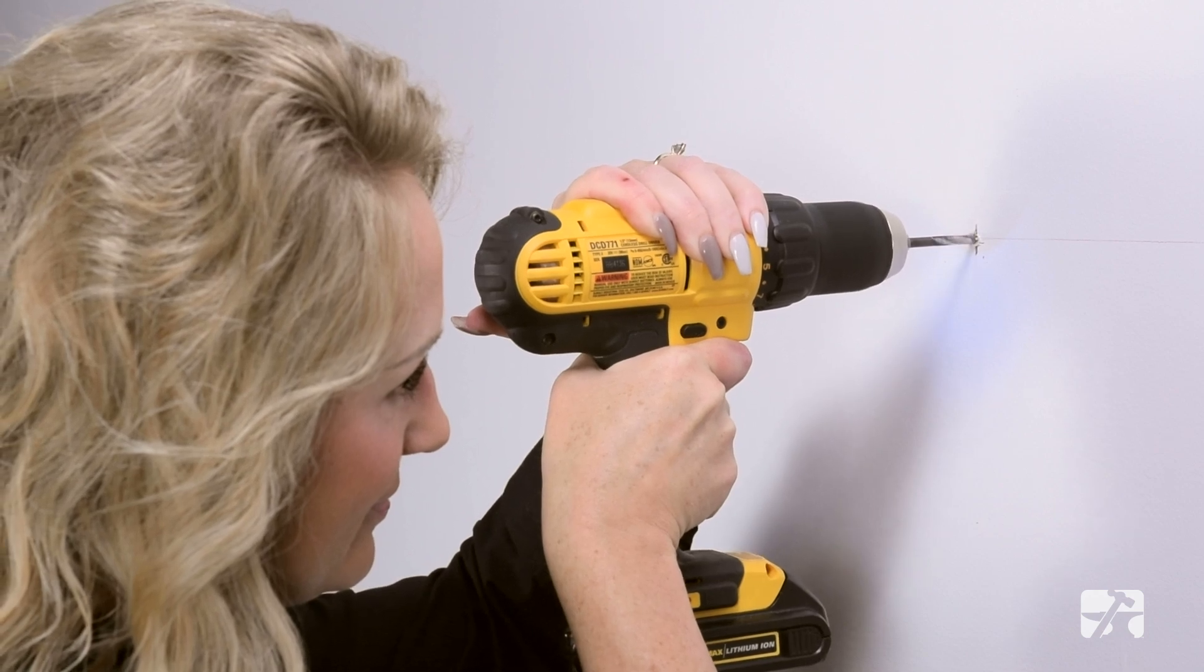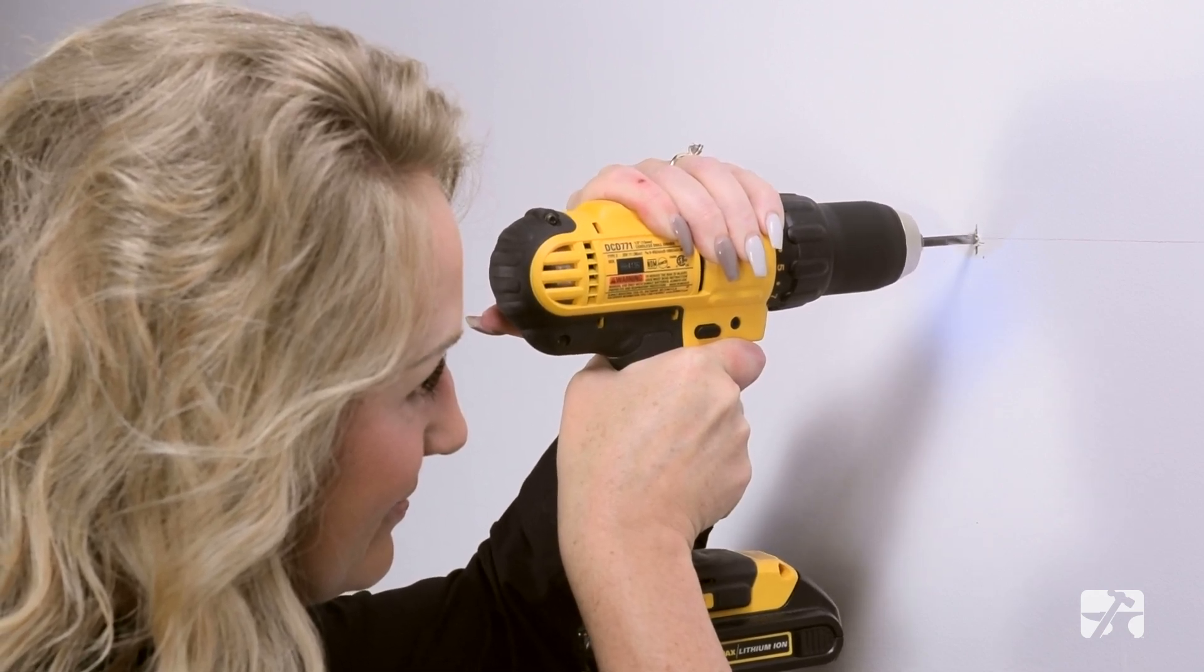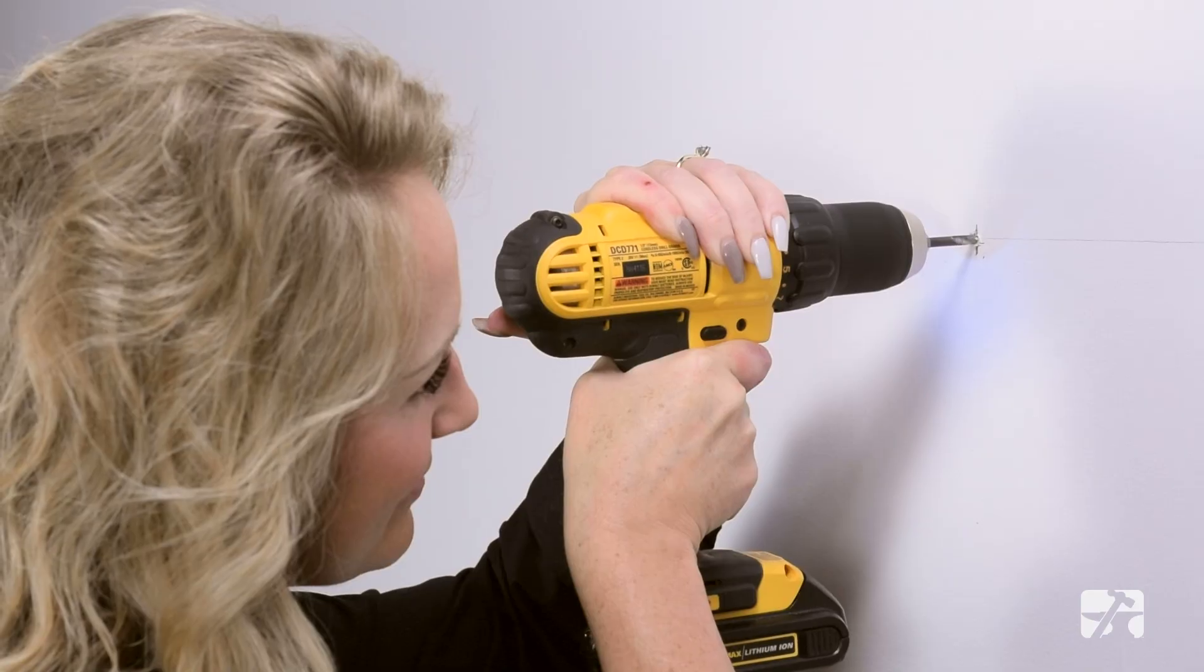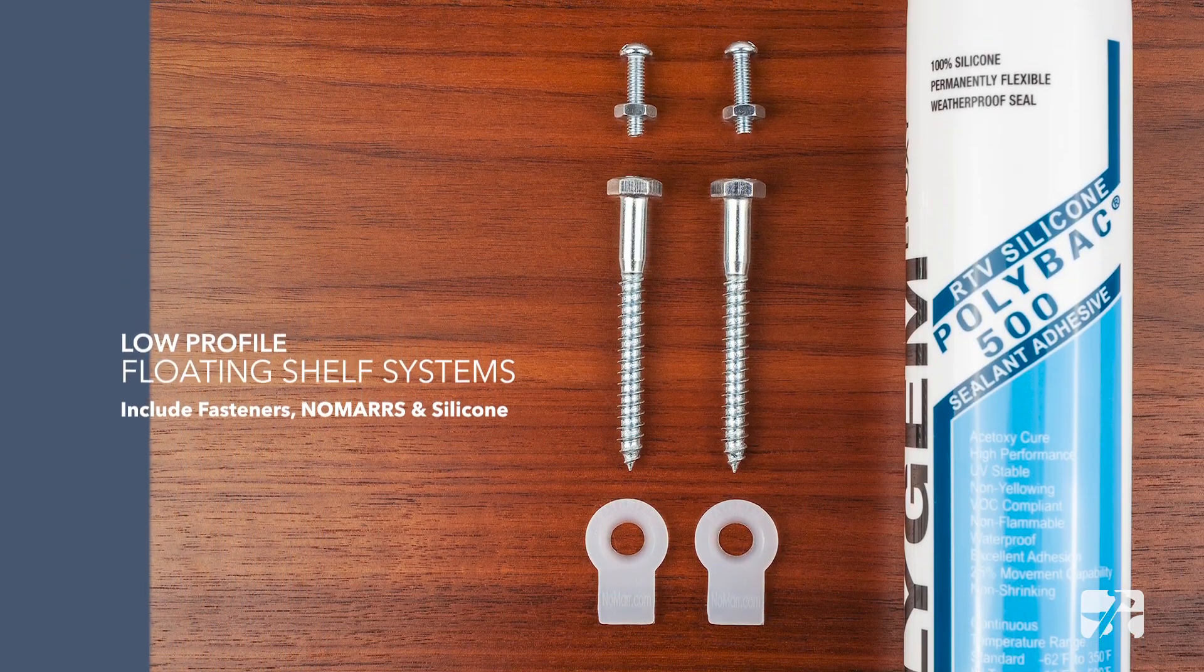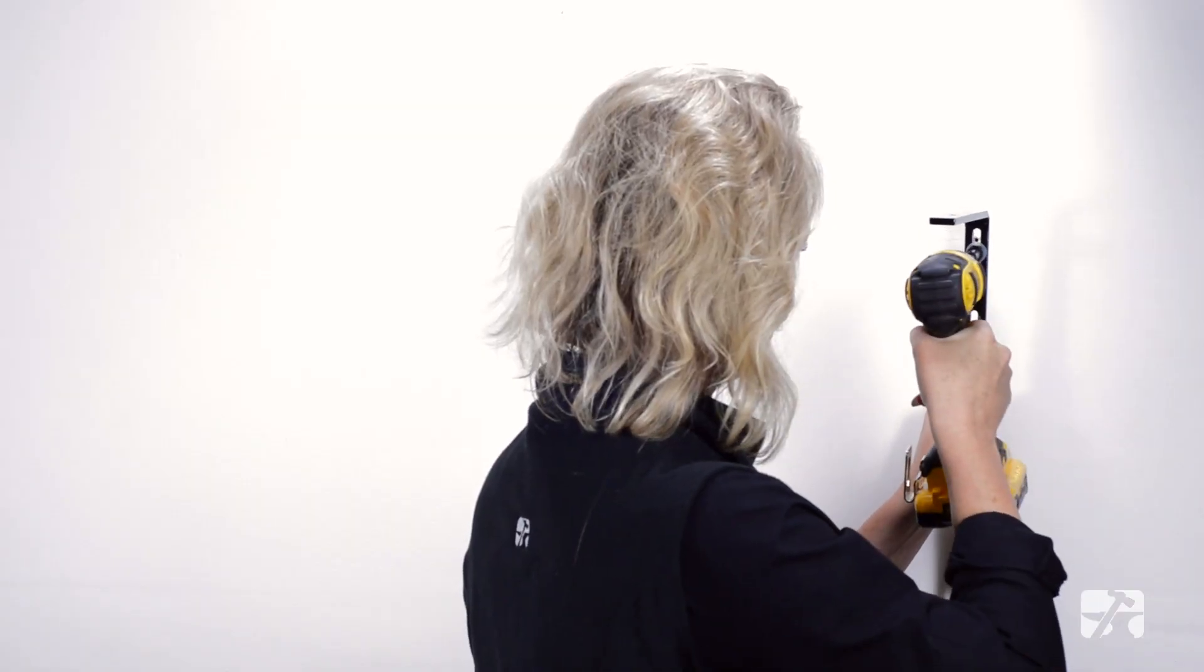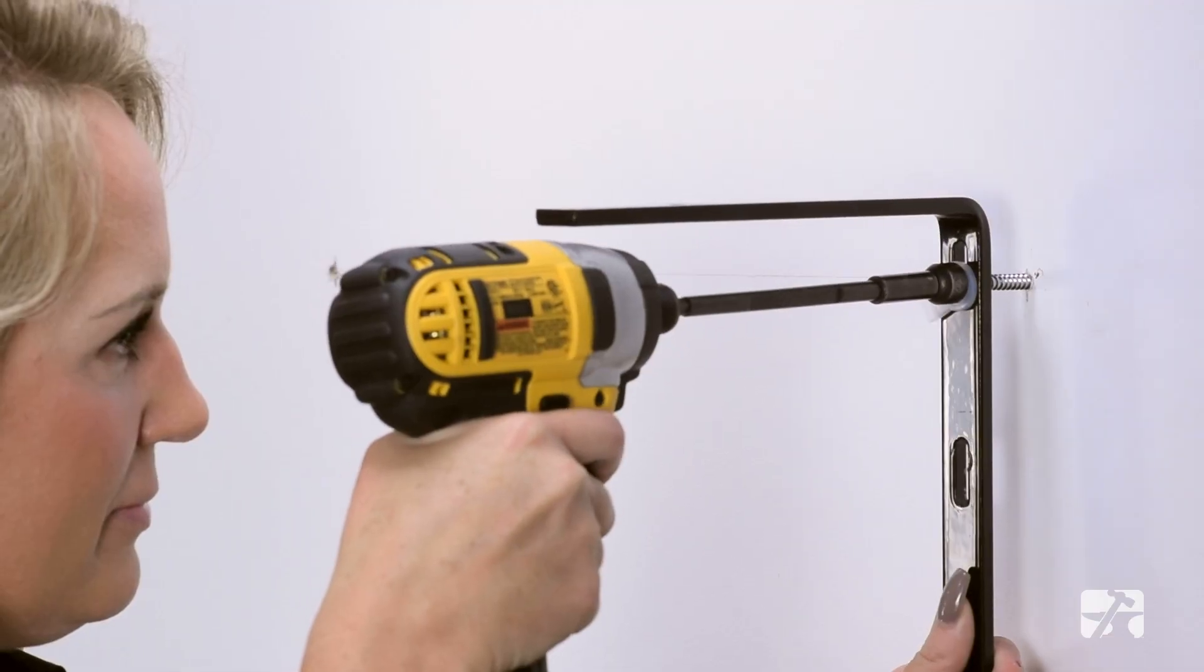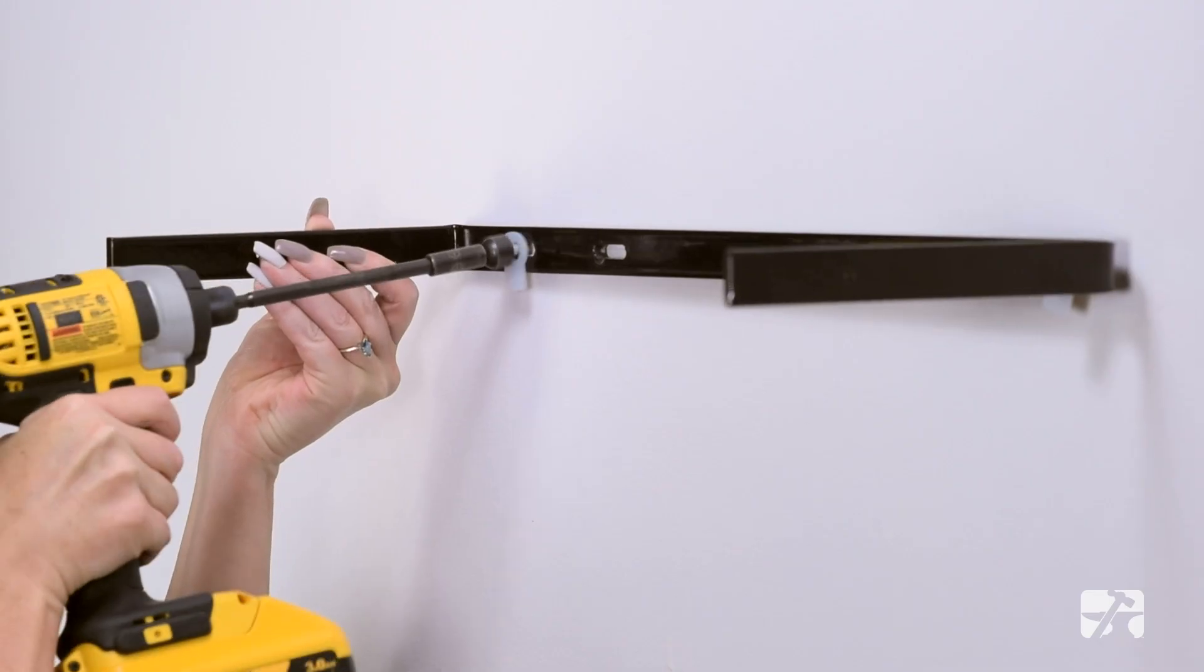Next, you will need to drill pilot holes using a 5/32nds or smaller drill bit. Use two quarter-20 by 2.5 inch long bolts to fasten the bracket. Once the pilot holes are drilled, hold the outer bracket in place and tighten down the fasteners entirely.